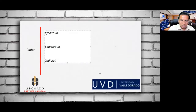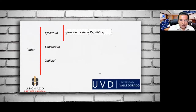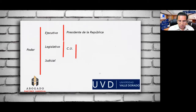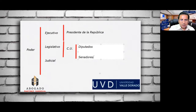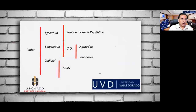El ejecutivo se lo encargo al presidente de la república. El legislativo al Congreso de la Unión, conformado por la Cámara de Diputados y la Cámara de Senadores. El poder judicial encabezado principalmente por la Suprema Corte de Justicia de la Nación, el poder judicial de la federación.